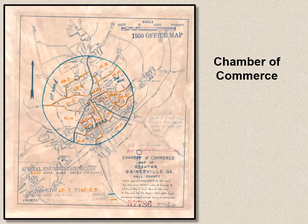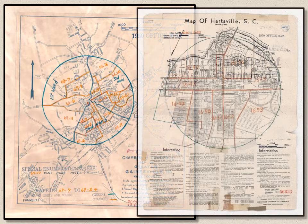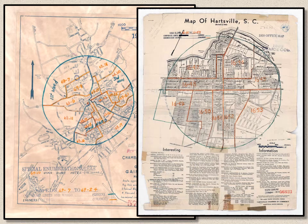I'm going to show you a couple of maps and where they come from. Here's a map of Greater Gainesville, Georgia, from the Chamber of Commerce. I enjoy these maps because they usually have more information about the area than a simple government map. And another Chamber of Commerce map from Hartsville, South Carolina — they have interesting points about the area.